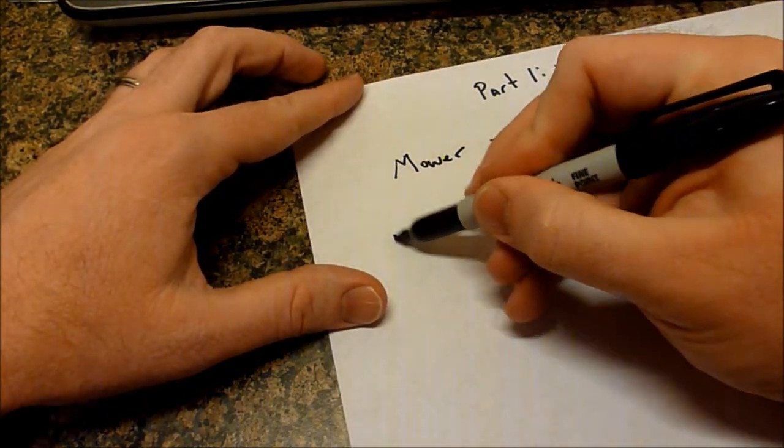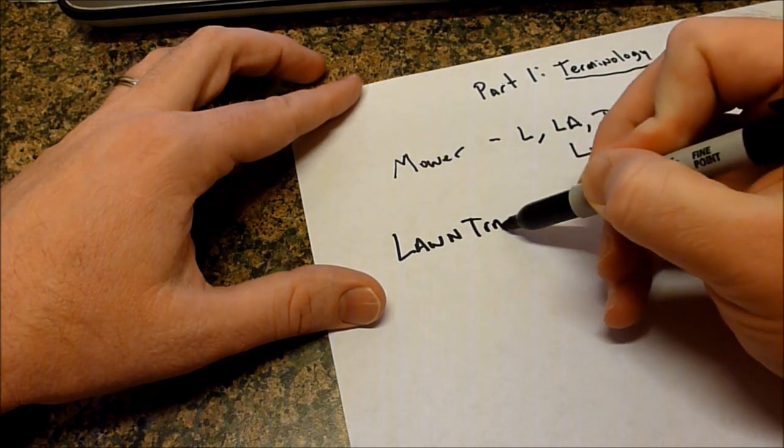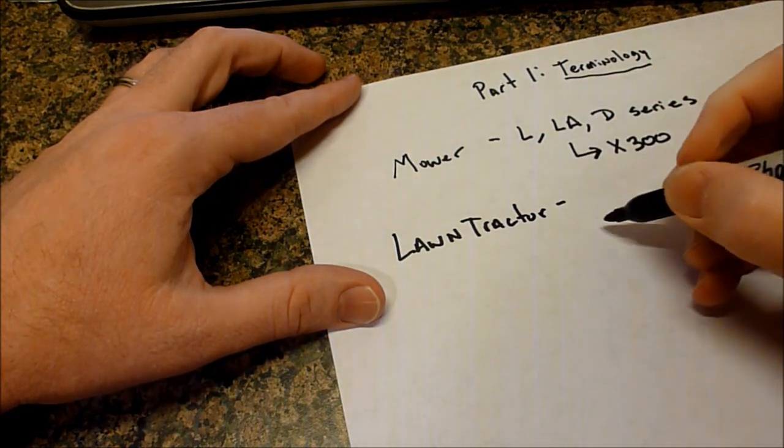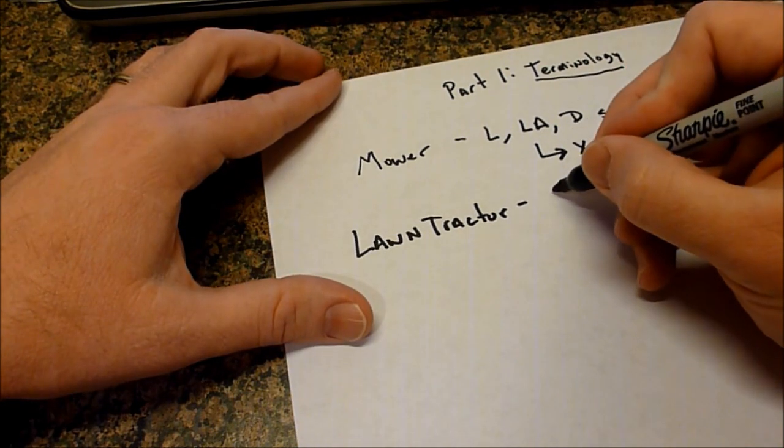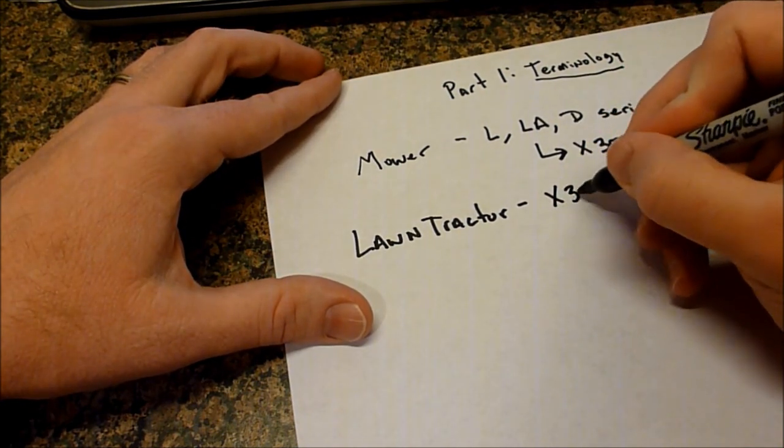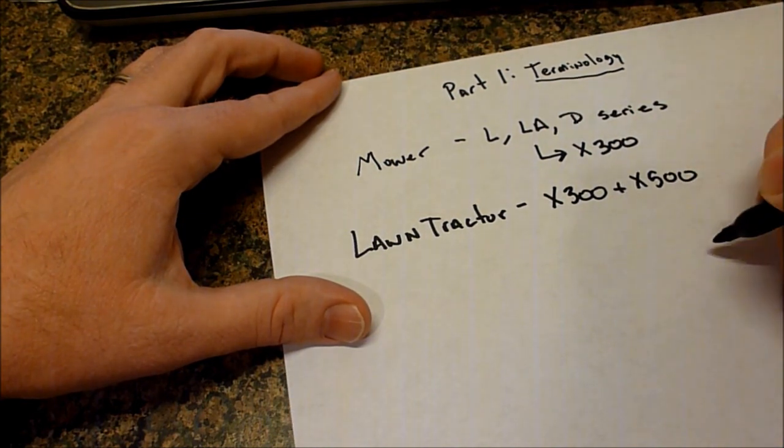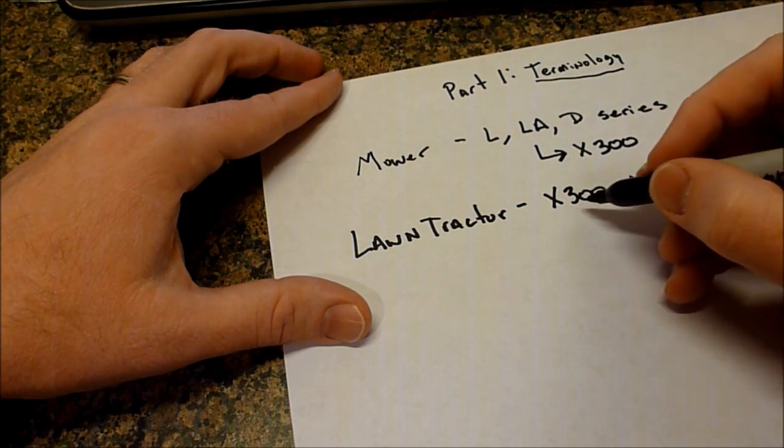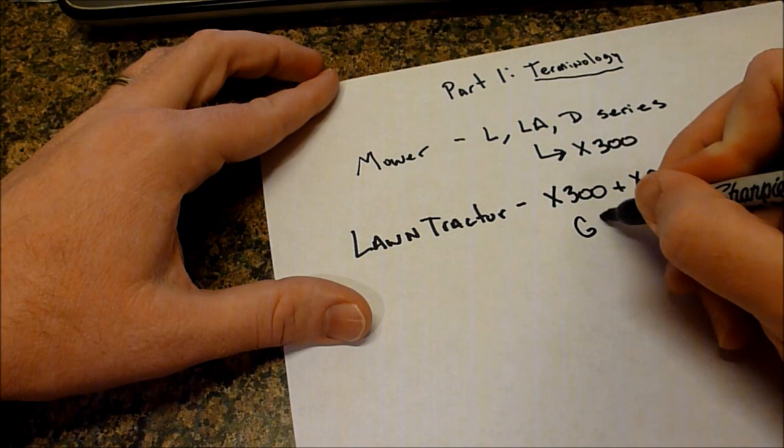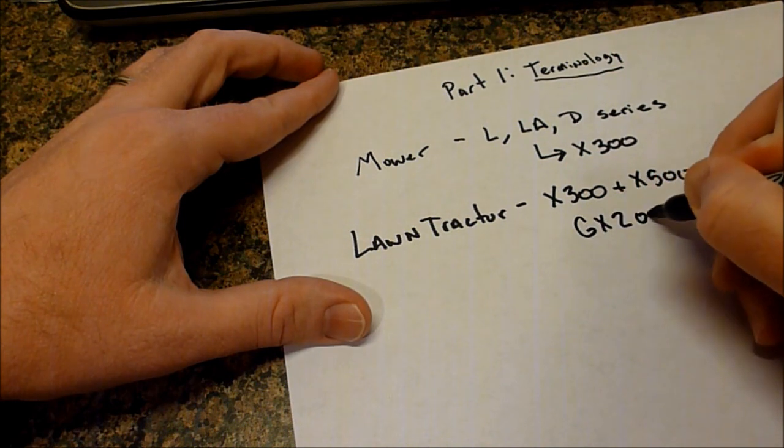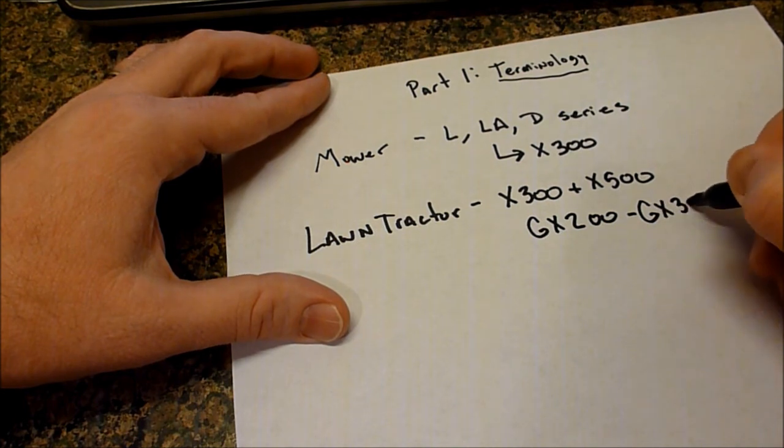Then we have what we call a lawn tractor. Lawn tractors are going to be mostly the higher X300 and the X500 series. That's what Deere considers most of those. If you want to go a little bit older than that, you could say some of the GX200 series, or maybe even some of the GX300 series.